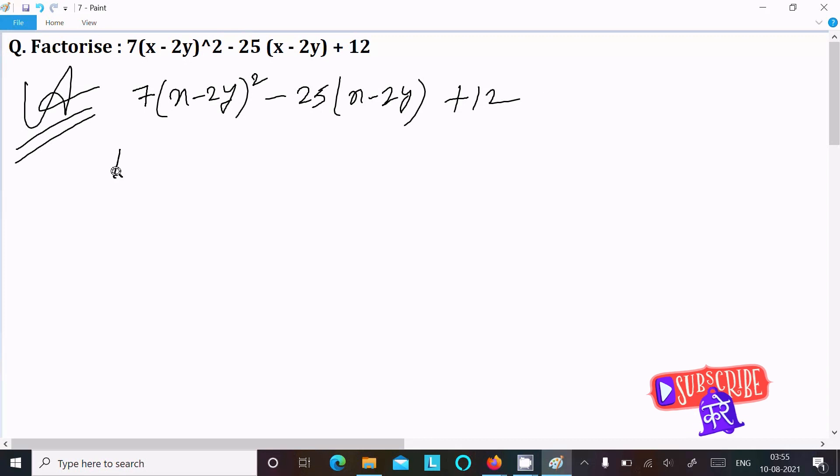If I assume k equal to x-2y, then in place of x-2y writing k. So here this is 7k² minus 25k plus 12. Now you can see it's looking quite simple.